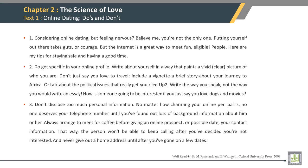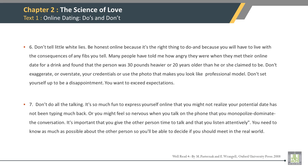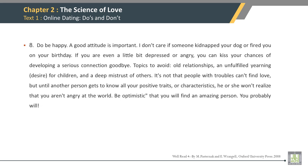What do you think this text is about? The first sentence of paragraph 1: 'Considering online dating but feeling nervous.' First sentence of paragraph 2: 'Do get specific in your online profile.' Paragraph 3: 'Don't disclose too much personal information.' Paragraph 4: 'Do spend time getting to know someone.' Paragraph 5: 'Do give someone the chance to impress you.' Paragraph 6: 'Don't tell little white lies.' Paragraph 7: 'Don't do talking.' Paragraph 8: 'Do be happy.' Last sentence of the text: 'Be optimistic that you will find an amazing person — you probably will.'